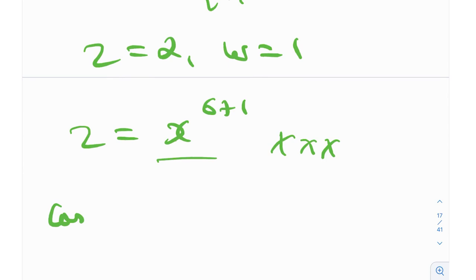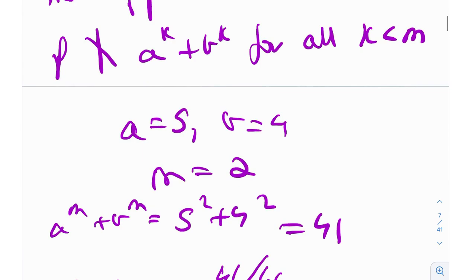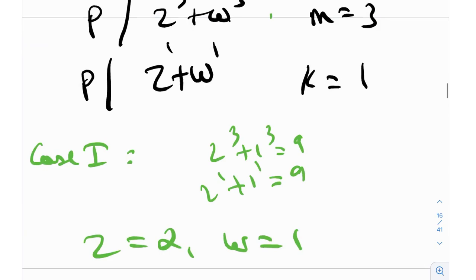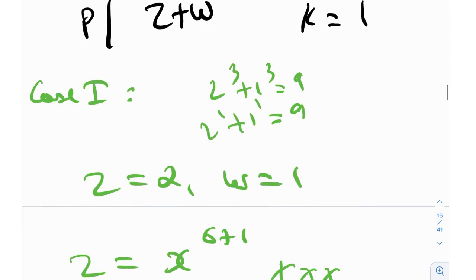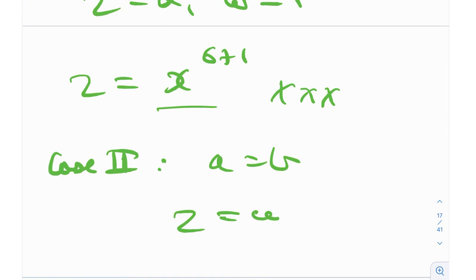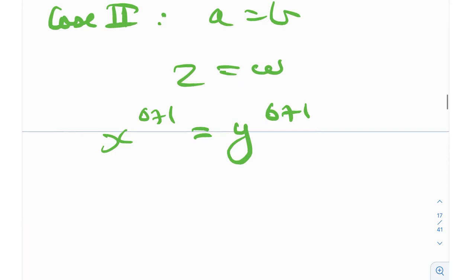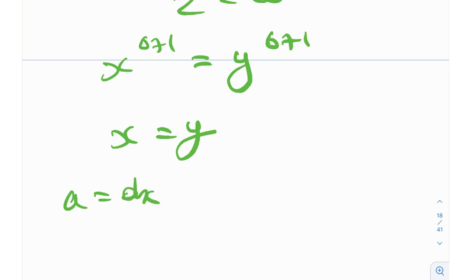Case 2: a is not greater than b, meaning a = b. In our case, Zsygmondy's theorem was applied to z and w, so z = w, meaning x^671 = y^671, hence x = y. Since a = dx and b = dy and x = y, we conclude a = b.